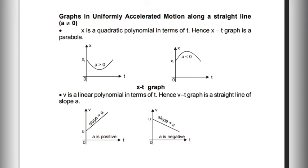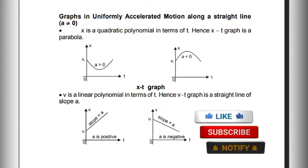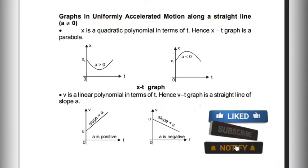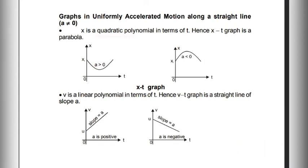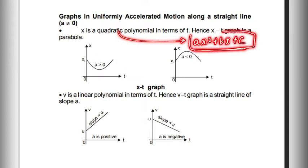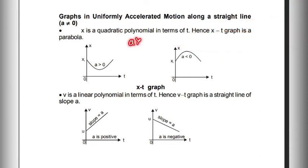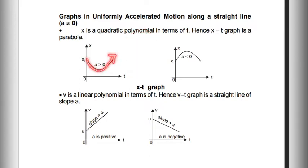Next comes uniformly accelerated motion along a straight line. If we have a quadratic polynomial in terms of t, then the x-t graph will be parabolic — just like ax² + bx + c is a quadratic equation giving a parabola. If the coefficient is always positive, the parabola opens upward, giving us an upward parabolic x-t graph.